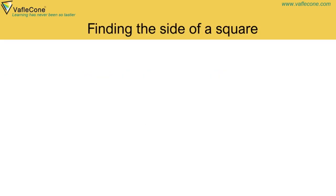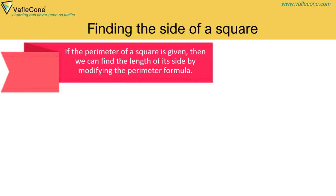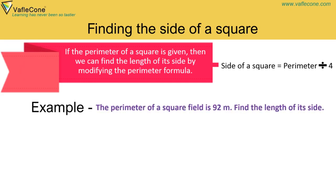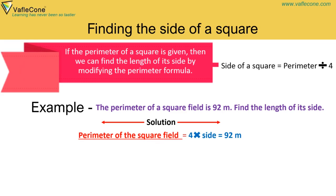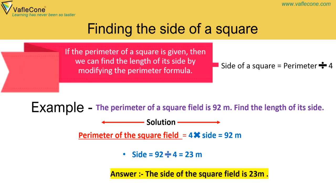Finding the side of a square: If the perimeter of a square is given, we can find the length of its side by modifying the perimeter formula: side of a square = perimeter divided by 4. Example: The perimeter of a square field is 92 meters. Find the length of its side. Solution: 4 into side = 92 m, so side = 92 divided by 4 = 23 meters. The side of the square field is 23 meters.